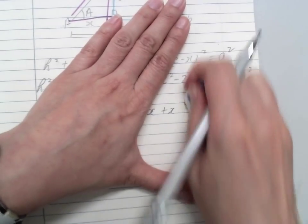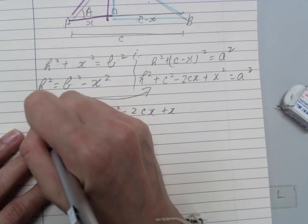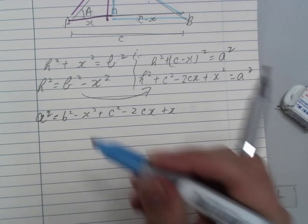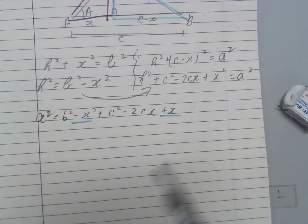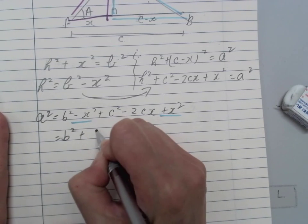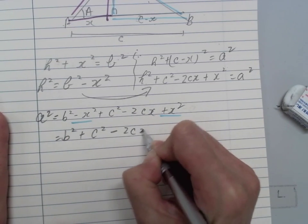I will put the A in the front. All right, so I will have the -X² and +X² gone. So now I will have B² + C² - 2CX.